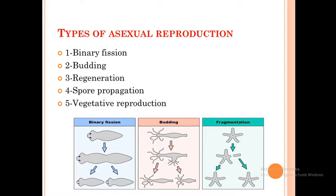Asexual reproduction takes place by mitosis division, which does not require special systems or structures in the living organisms. It keeps the genetic structure of the living organism, producing individuals identical in genetic structure to the original organism. There is no genetic variation — no difference in the resulting offspring compared to the original organism, because the new offspring gets a full copy of the parent's genetic traits during mitosis.